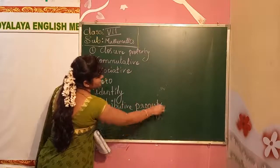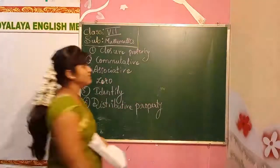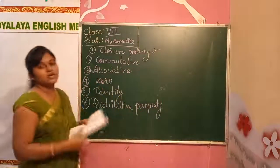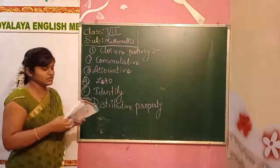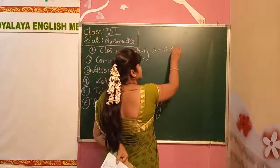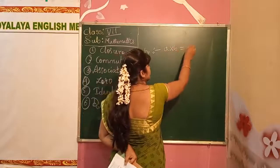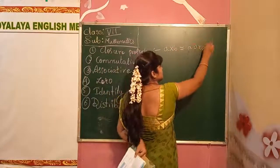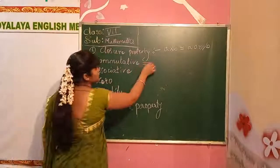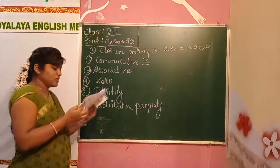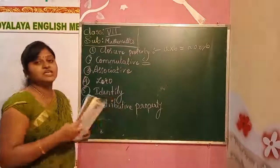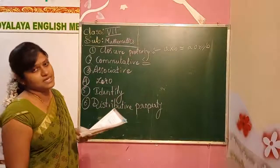We will write the statements once. In the closure property, we have 2 integers. When we multiply 2 integers, we get an integer itself. We may get A or B. Next, the commutative property.